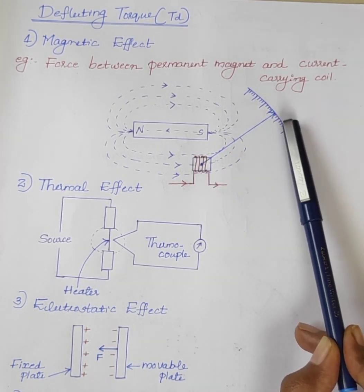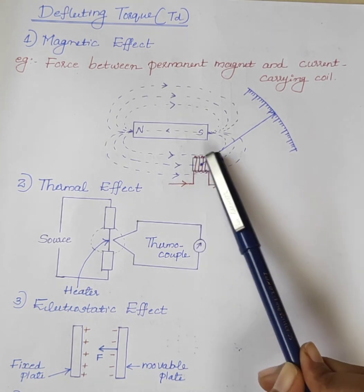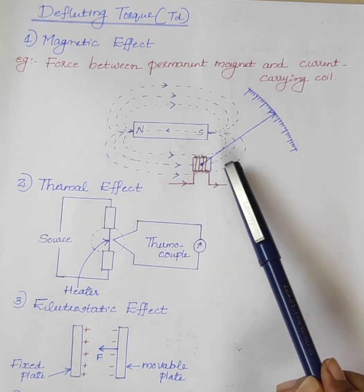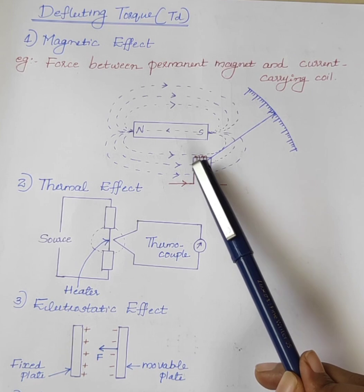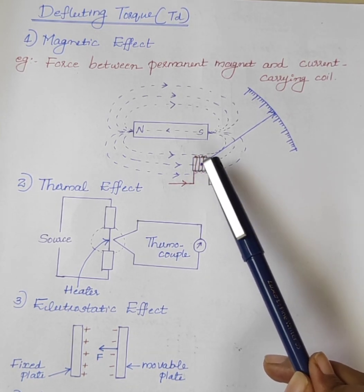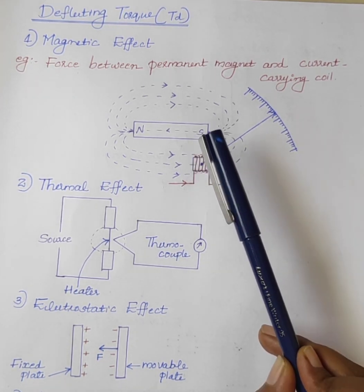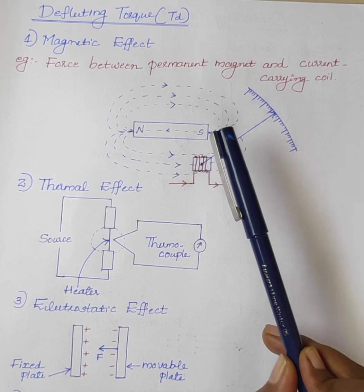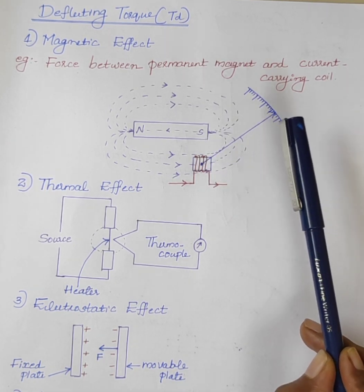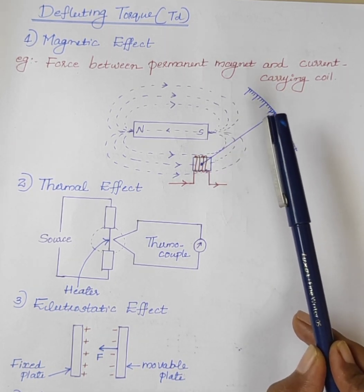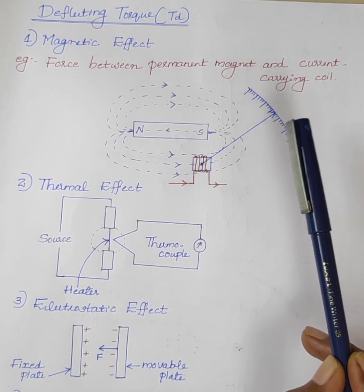The movement of the pointer is proportional to the magnitude of the current flowing through the coil. This effect is utilized in permanent magnet moving coil instruments, which we will discuss in the upcoming classes.